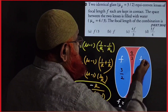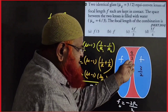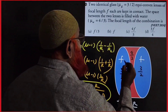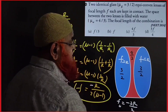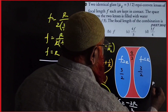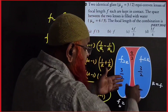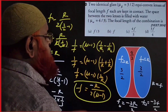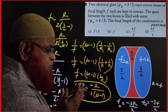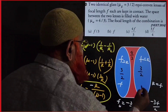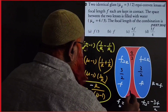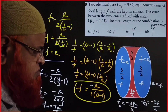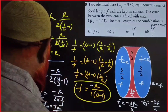Since the radius of curvatures for all three lenses are the same, and for the glass lens f = R, I can write R = f. So the focal length of the water lens becomes −3f/2. Now I know the outer lenses each have focal length f and the middle lens has focal length −3f/2.